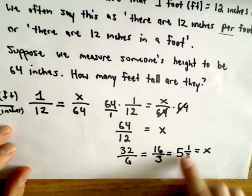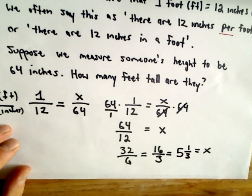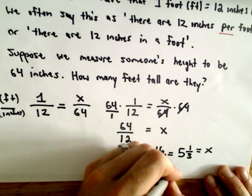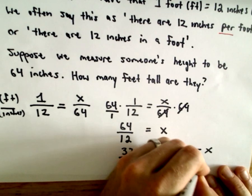I'm going to make this into a mixed number now. Three goes into sixteen five times with one left over. So it basically says you are five and one-third feet tall. That's how tall that person would be. Or if we convert it back to inches, they'll be five feet.